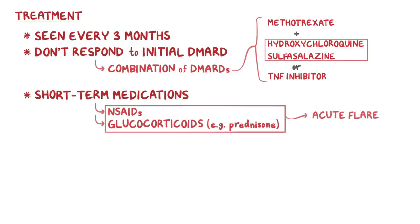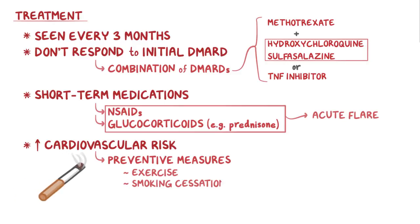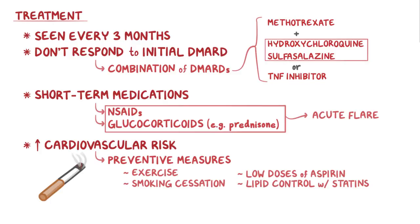Finally, since individuals with rheumatoid arthritis have an increased cardiovascular risk, they should take preventative measures like exercise and smoking cessation, as well as routine use of low doses of aspirin and lipid control with statins.